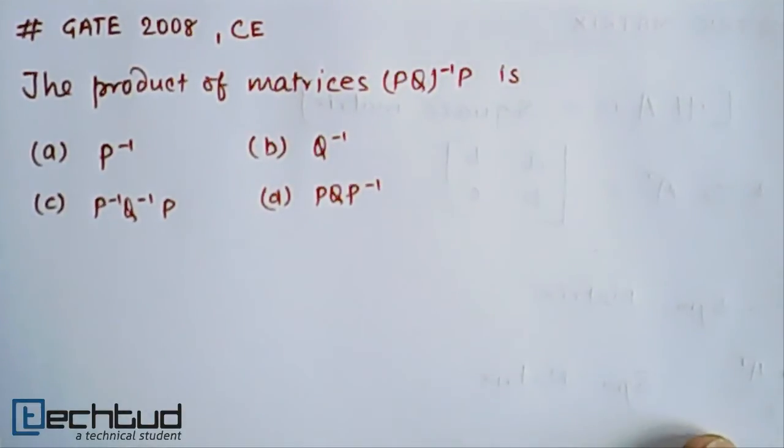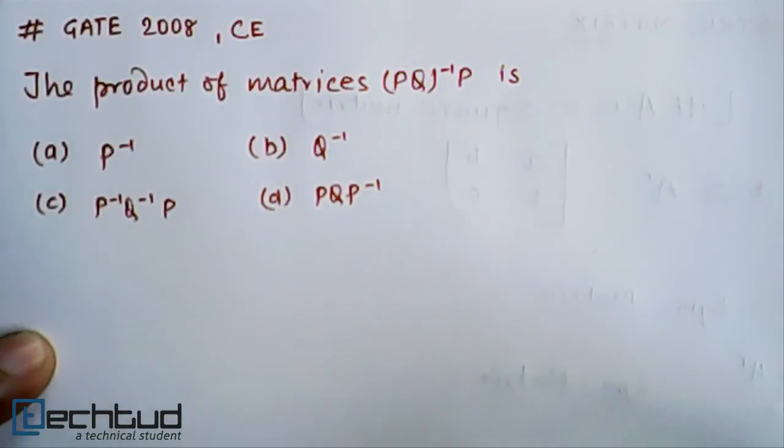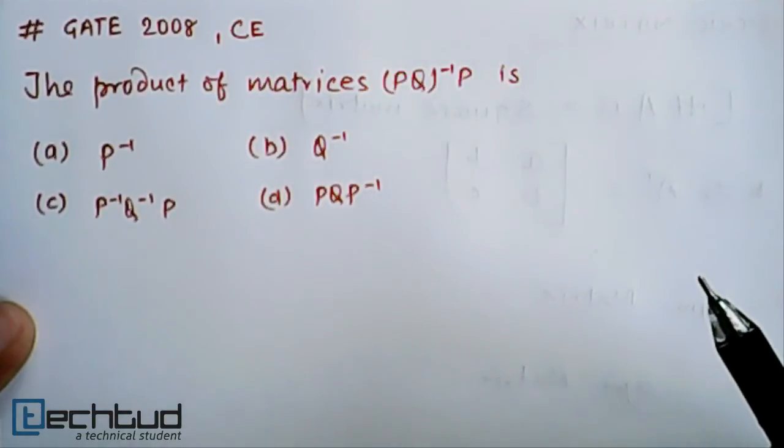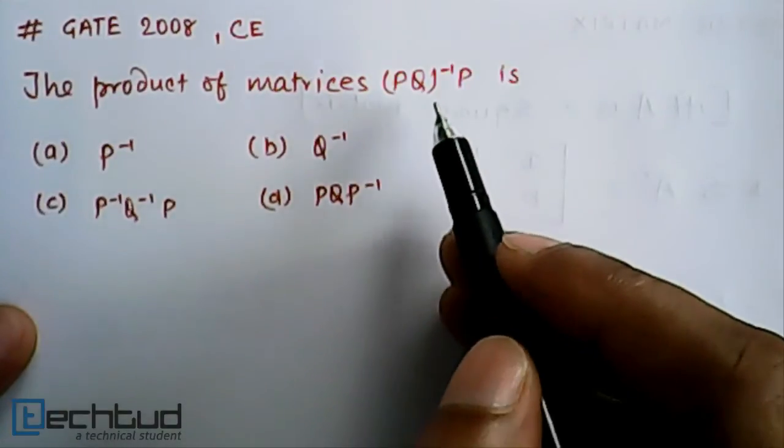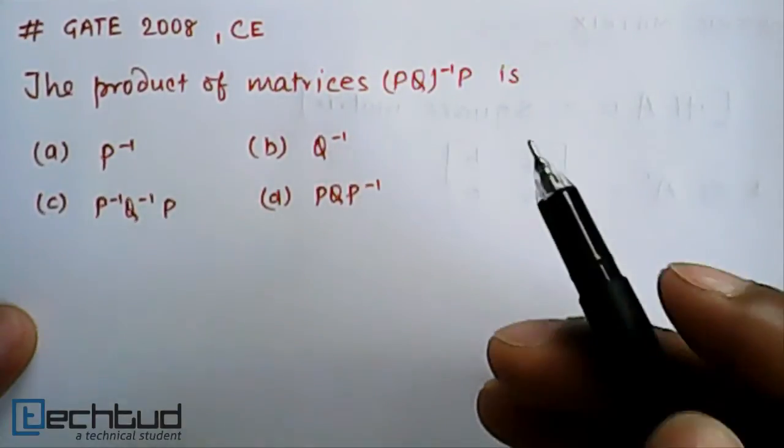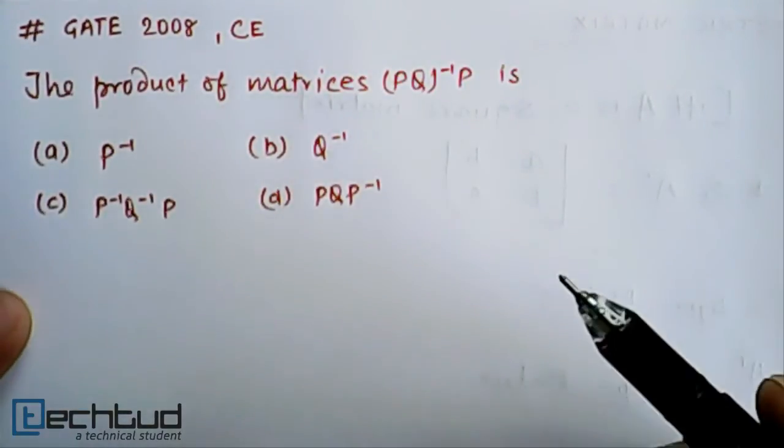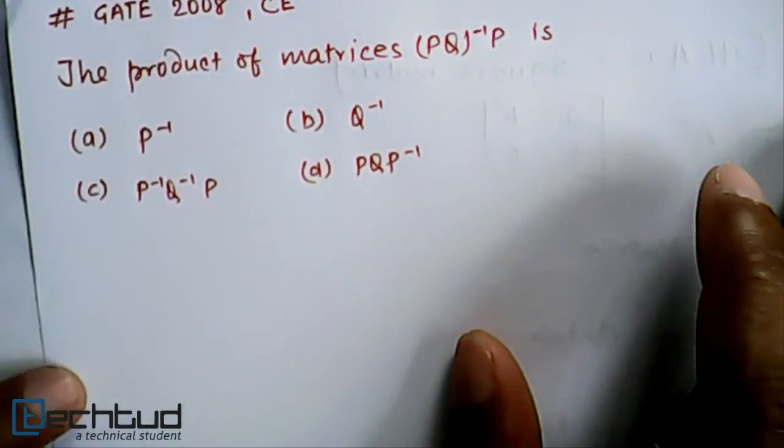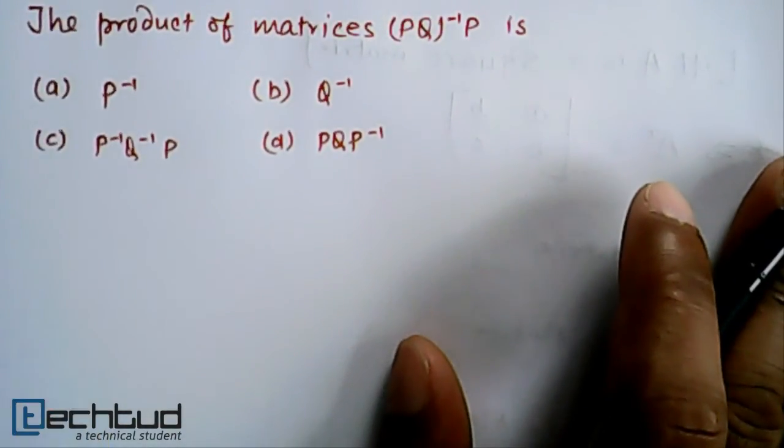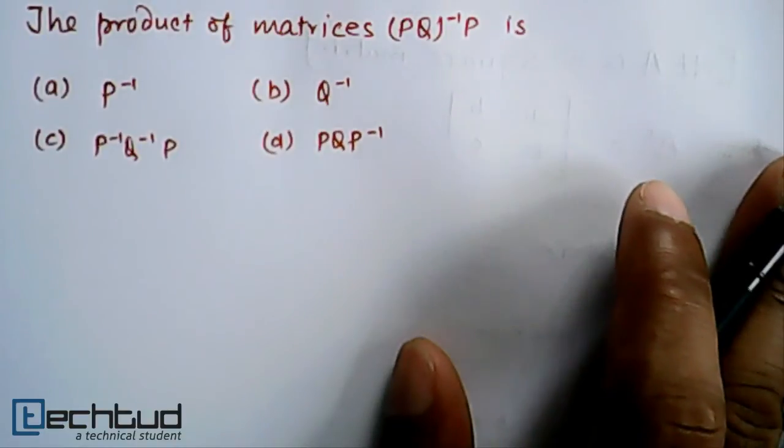How will we solve this question? A simple approach, which is not actually simple, would be to assume two matrices P and Q, multiply them, find the inverse, and go through these steps statically. But it's a very simple question asked for one mark. You cannot give it more than one minute to solve.